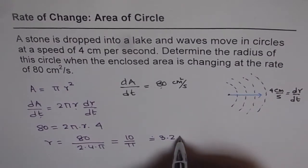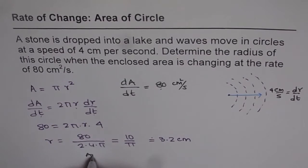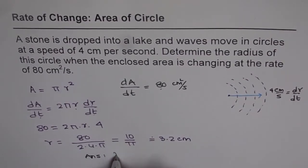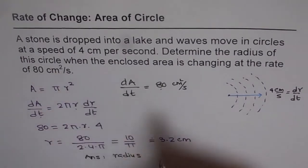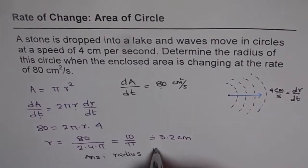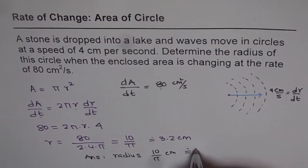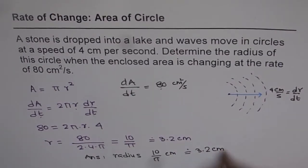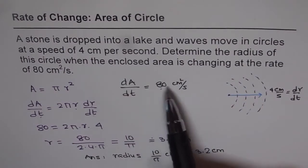So the answer is radius: we can always write the exact value which is 10 over pi centimeters, or it could be approximately 3.2 centimeters when the change in area is 80 centimeters square per second.